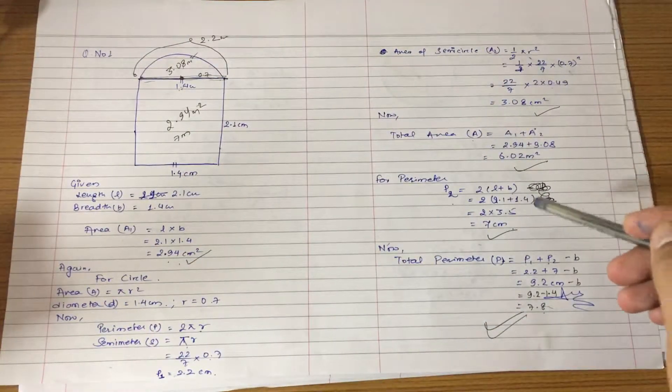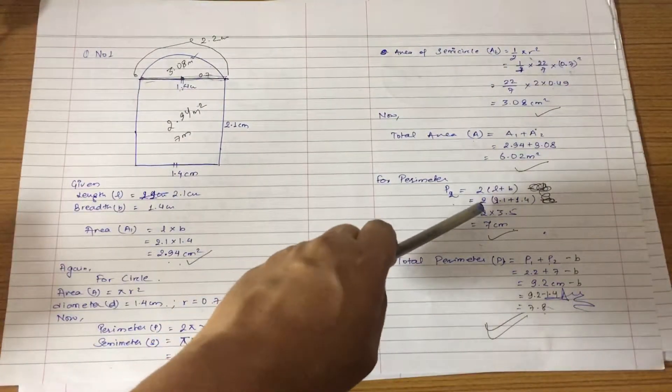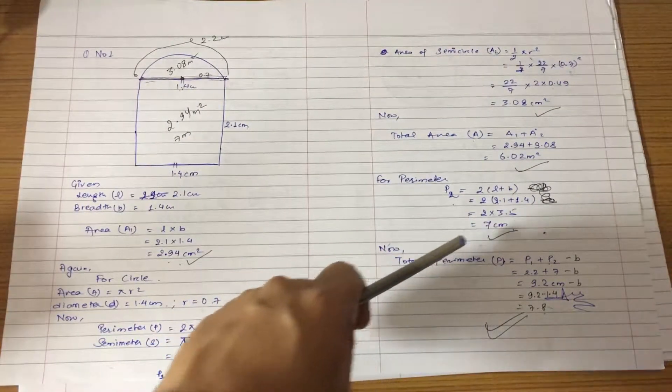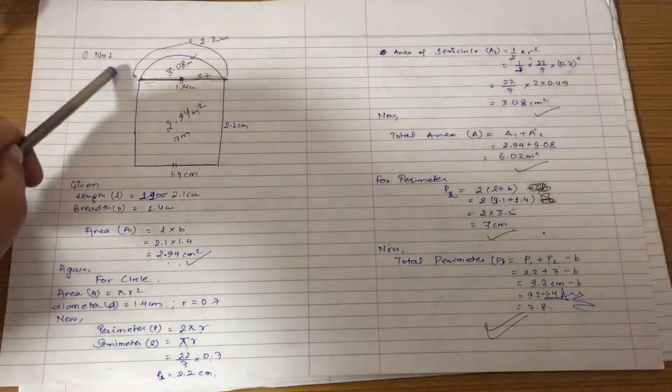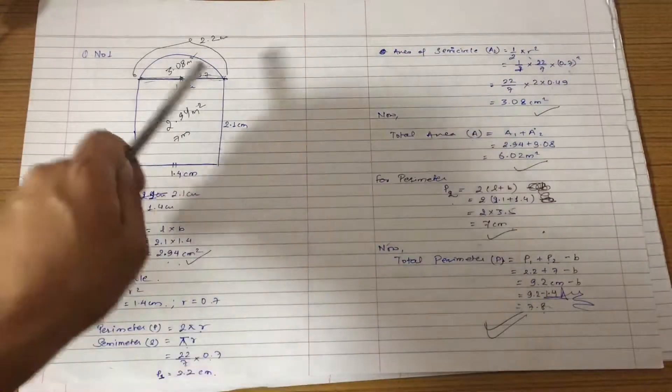We have to add the perimeter of 2L plus B and 7. The total perimeter of 2.2 and 7, we have to add 9.2.